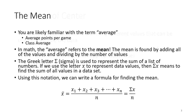You're likely familiar with the term average — for example, the average points per game of a particular team, or your class average. In math, the average refers to the mean. The mean is found by adding all the values and dividing by the number of values. The Greek letter Sigma represents the sum of a list of numbers, so Sigma X means the sum of all values in the data set, and we can write a formula for the mean as shown.